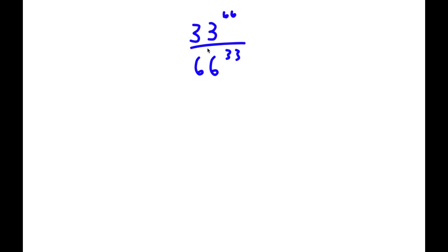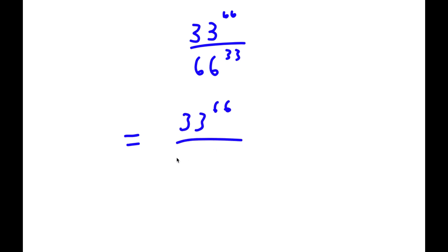In this problem, I have 33 to the power of 66 over 66 to the power of 33. The first thing I'm going to do is rewrite 66 as 2 times 33. So now I have 33 to the power of 66 over 2 times 33 to the power of 33.